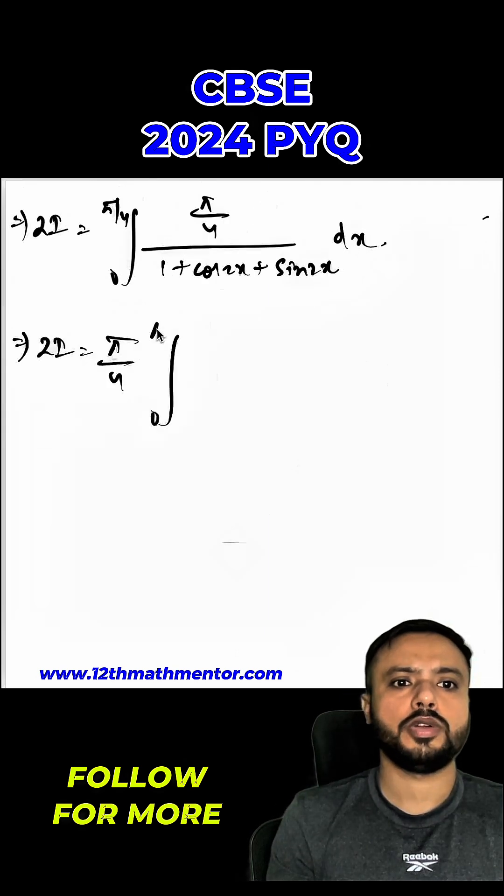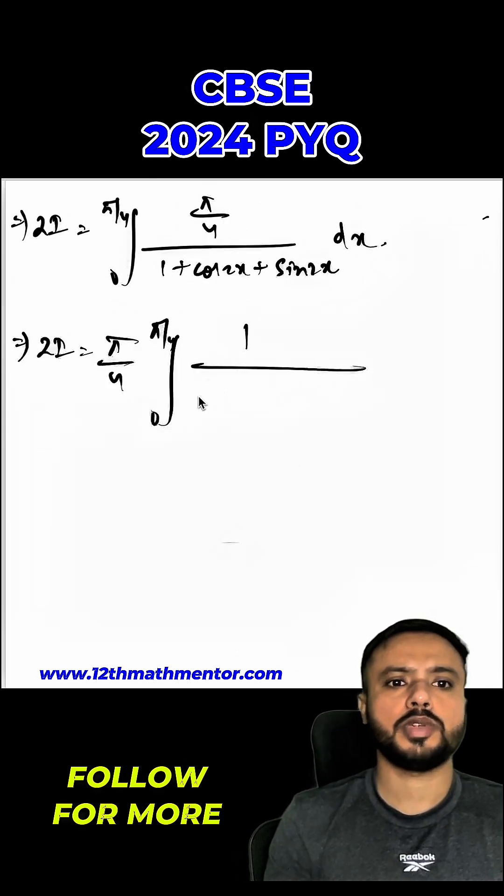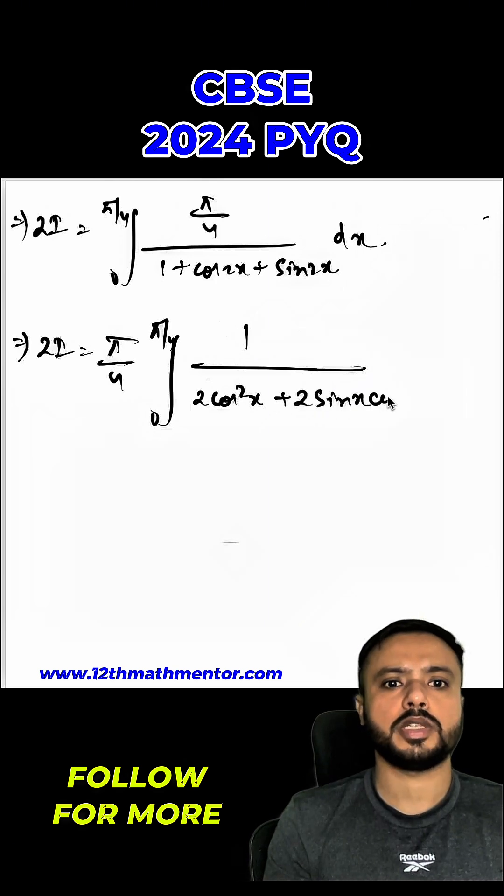So, 2i will be equal to pi upon 4, 0 to pi by 4, 1 plus. So, 1 plus cos 2x is 2 cos square x. And sine 2x is 2 sine x cos x dx.